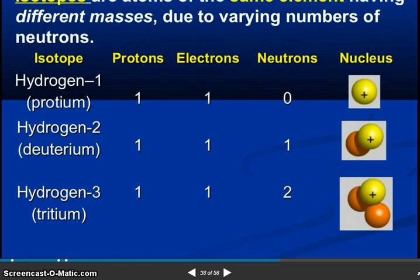So isotopes are atoms of the same element having different masses due to varying numbers of neutrons. You can see hydrogen 1 protium, hydrogen 2 deuterium, hydrogen 3 tritium, with neutrons 0, 1, 2.